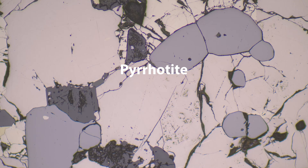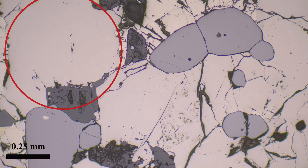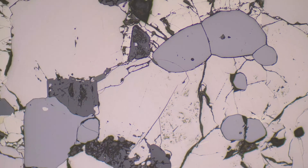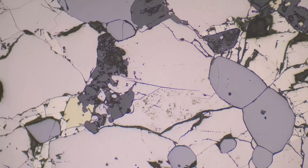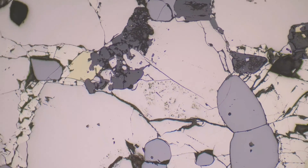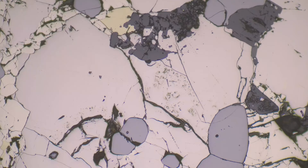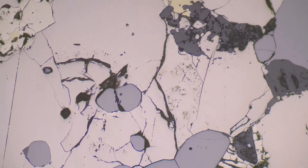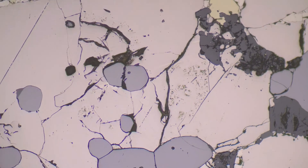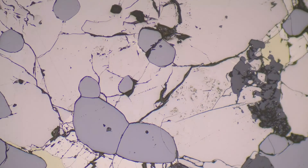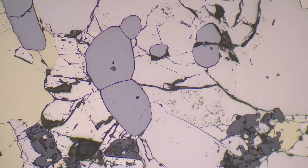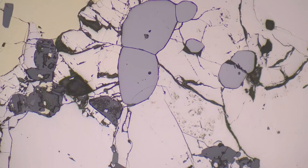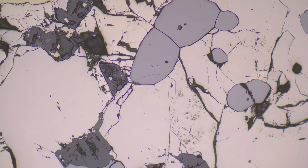Now we're looking at the mineral pyrrhotite in reflected light. It's much of this slide — this kind of pinky material that we're seeing. As we spin the slide you can see on the edges some of them are going from that pinky color into a paler color. There is also pyrite there — that's the paler color — but there are slight hints of the change.